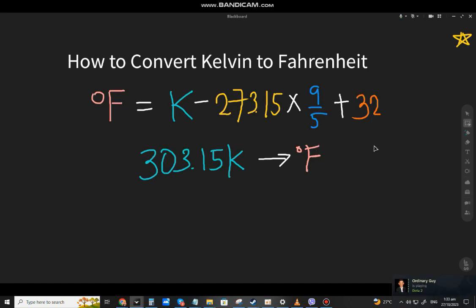Without further ado, let's have the first example. 303.15 Kelvin - take the Kelvin value, so that will be 303.15 and minus 273.15.